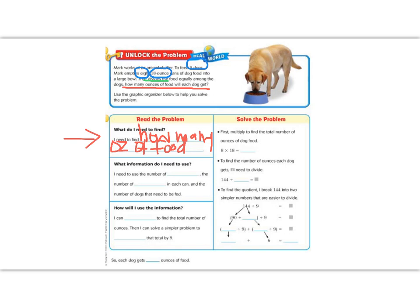Our next section says, what information do I need to use? It says, I need to use the number of cans, the number of ounces in each can, and the number of dogs that need to be fed. If we look back at our numbers, the number of dogs that need to be fed is nine.